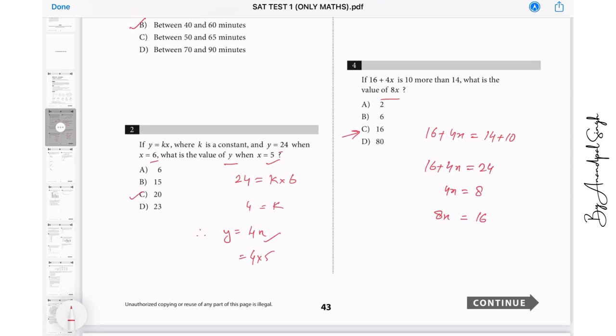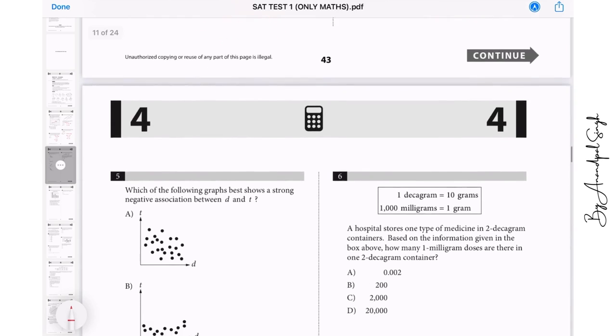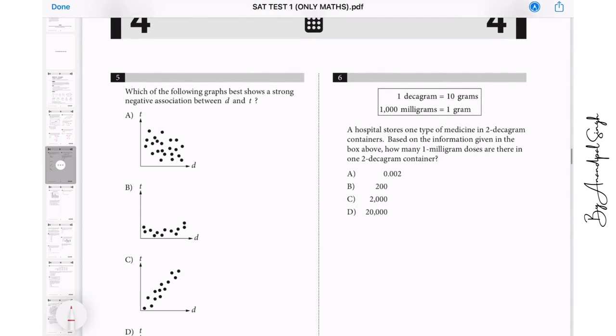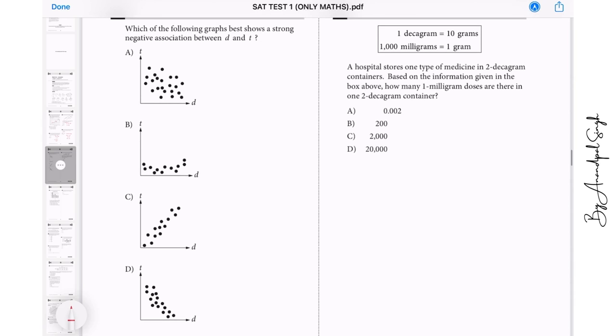So I will go with option number C. Let us go to question number 5. Which of the following graph best shows a strong negative association? Negative association means when one quantity increases another decreases. So we observe that the most negative is this D option, so we will go to D.